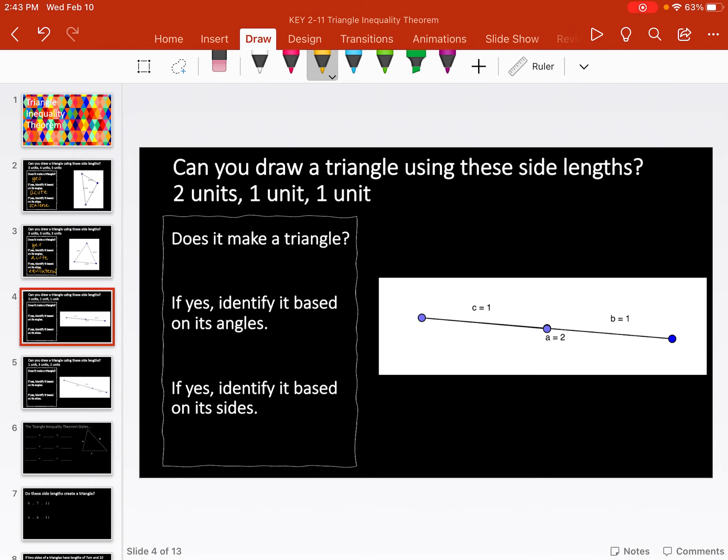Is it possible to draw a triangle using the side lengths 2, 1, 1? And I show you here, when I made the points connect, it does not make a triangle. It makes a flat line. So does this make a triangle? No.